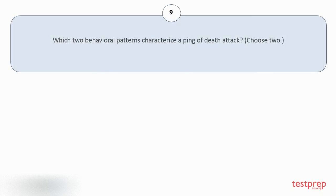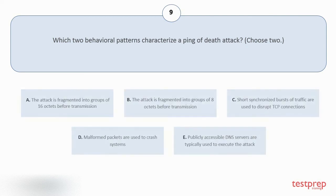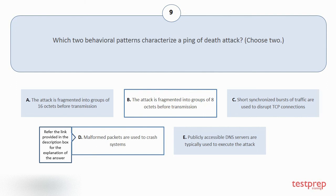Question number 9. Which two behavioral patterns characterize a ping of death attack? Choose two. Your options are: A. The attack is fragmented into groups of 16 octets before transmission. B. The attack is fragmented into groups of 8 octets before transmission. C. Short synchronized bursts of traffic are used to disrupt TCP connections. D. Malformed packets are used to crash systems. E. Publicly accessible DNS servers are typically used to execute the attack. The correct answers are option B and D.